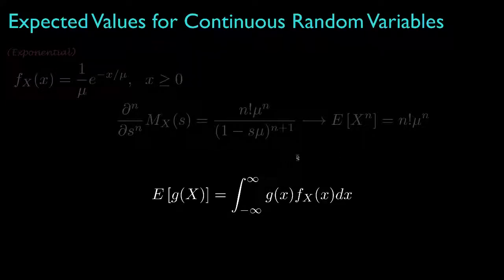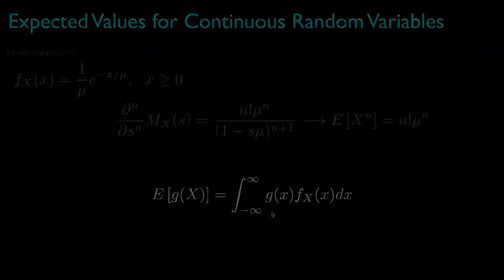In summary, the expected value for any function of a random variable is obtained by integrating the product of the probability density function with the function evaluated at all values in the range of the random variable. This is how we evaluate the important first and second moments, and we've introduced another important expectation — the moment generating function — which can be helpful for finding moments of arbitrary order.